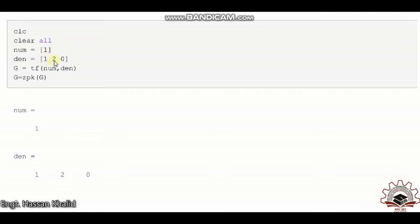The numerator is one and the denominator is one, two, and zero, meaning it's s squared plus two s plus zero. Take the transfer function numerator and denominator. We can also mention it in the form of zero pole gain.